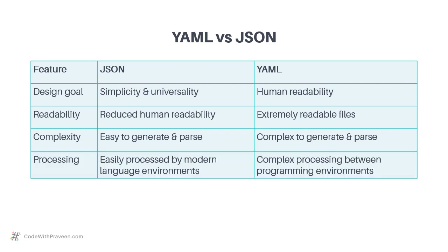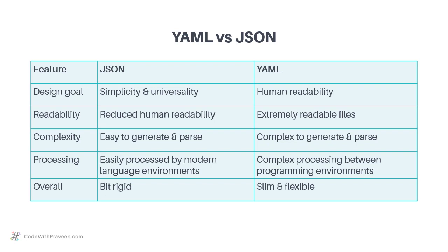When it comes to processing, JSON is generally easier to process by various language environments, whereas YAML is a bit more complex. In short, YAML is considered slim and flexible, whereas JSON is considered a bit rigid. One additional detail that makes YAML flexible is that you can represent various complex structures more easily in YAML.